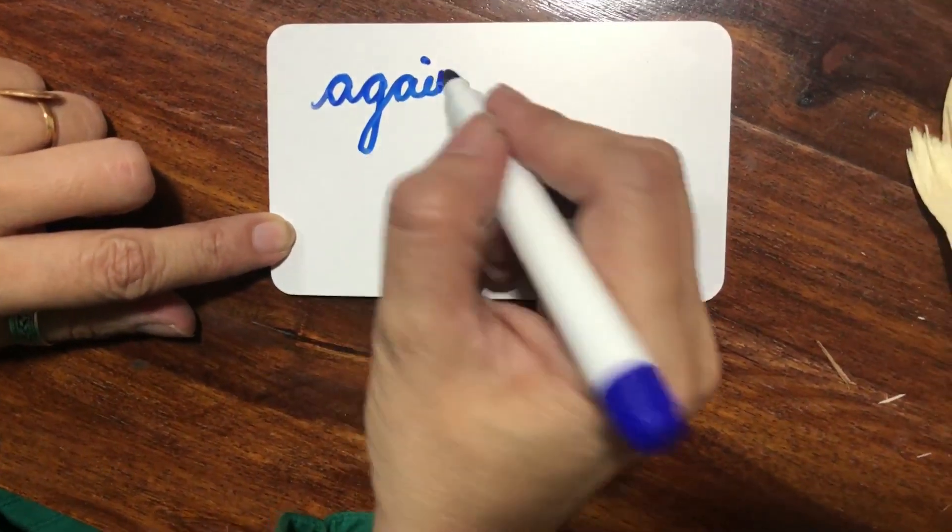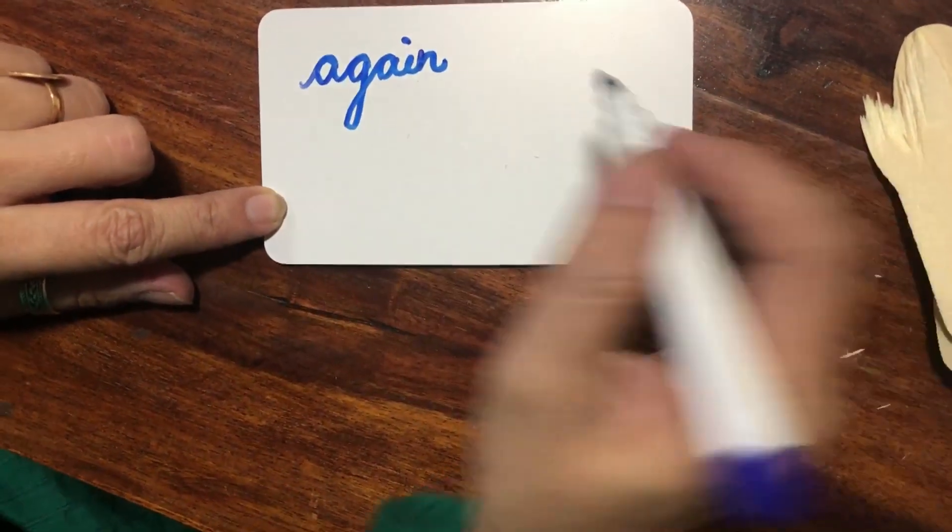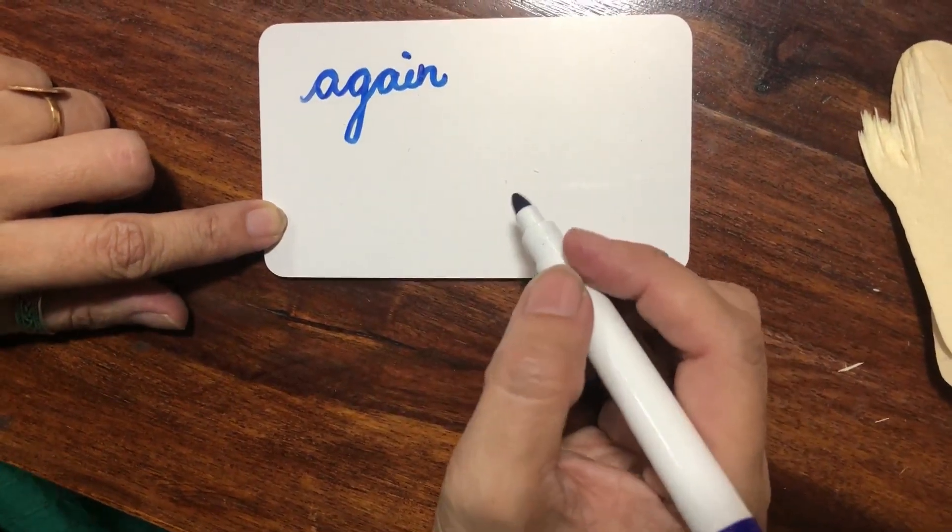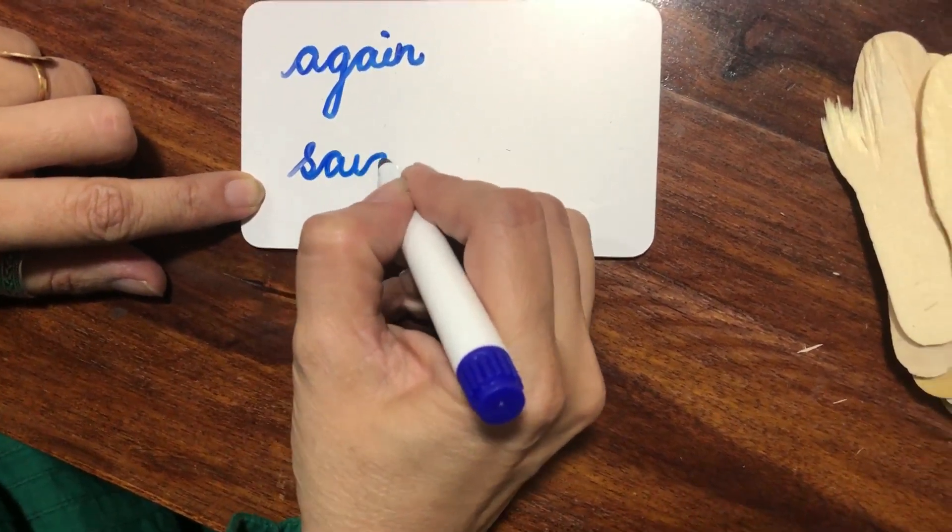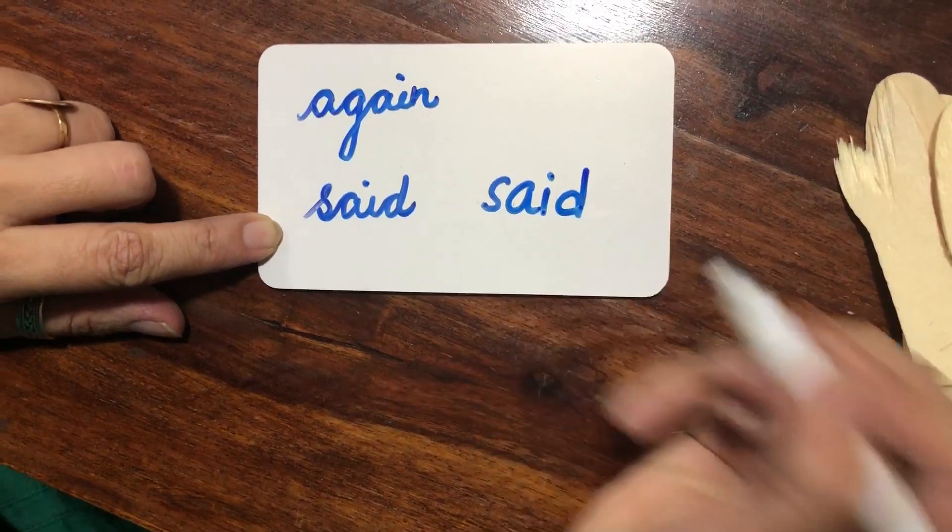Now, one very important thing to notice is do not insist that the child writes in a straight line. This only comes with practice. You are concentrating on the correct spelling, not handwriting here. So even if the child writes like this, it's fine.